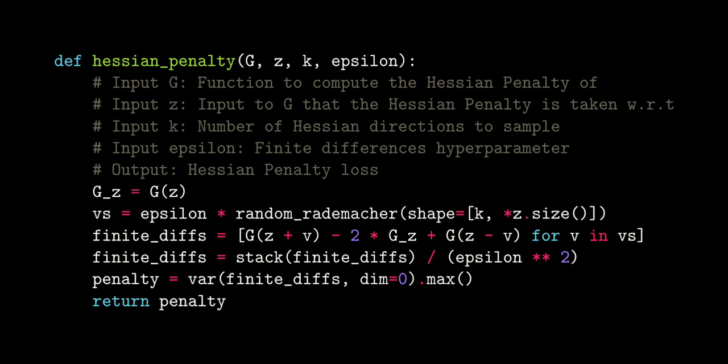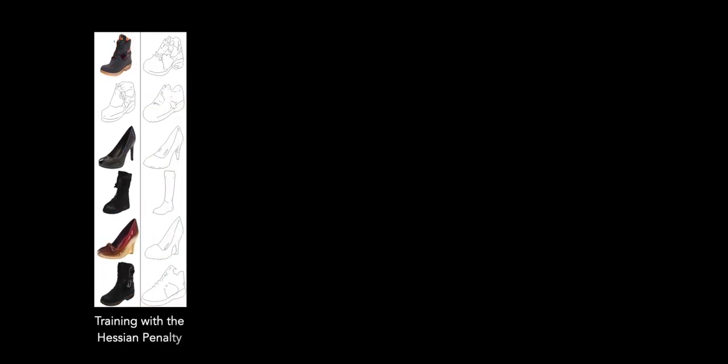In this paper, we show results applying it to generative adversarial networks as a regularizer, but we know that the Hessian penalty is a model-agnostic approach to disentanglement that doesn't require architectural modifications, unlike most existing popular disentanglement algorithms. Now we'll move on to experiments.